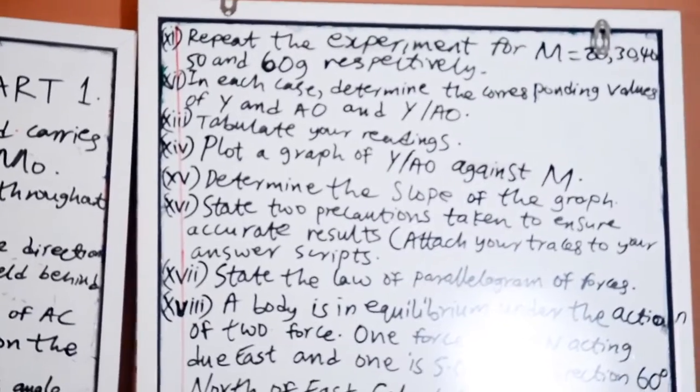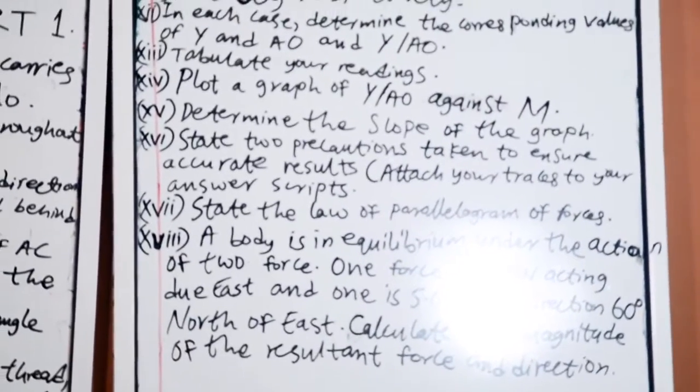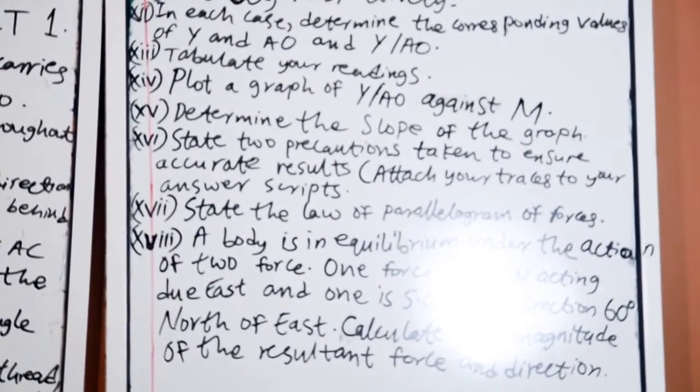Thirteen: Tabulate your readings. Fourteen: Plot a graph of Y over AO against M. Determine the slope of the graph.